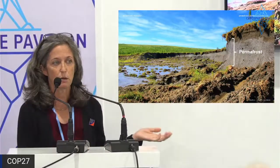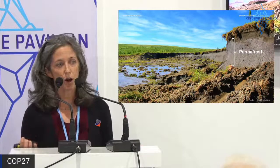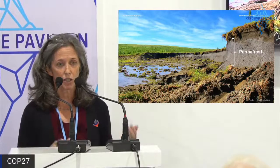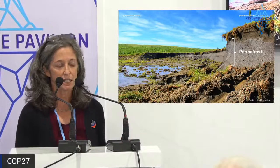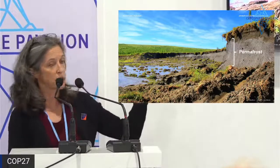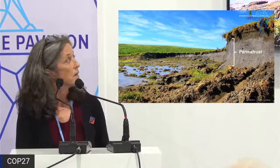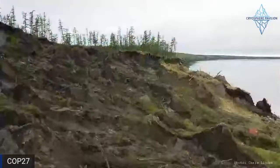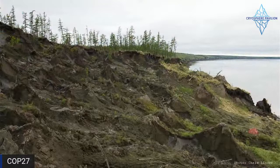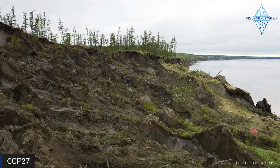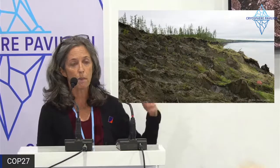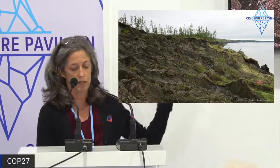This is a picture of abrupt thaw — going from a frozen to a thawed state is clearly a change in the qualitative state of the system, and in this case it's quite extreme. Another photo in northeast Siberia: a regular forest with large ice wedges and massive ice in the system — the ice melts, the ground collapses, and you're never going to go back to the original state.